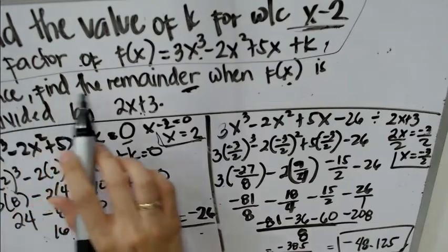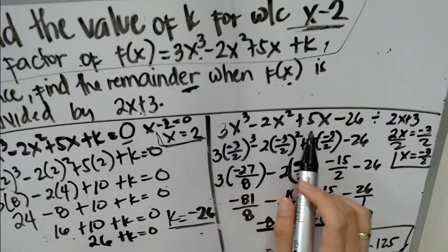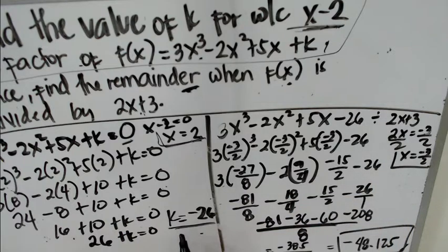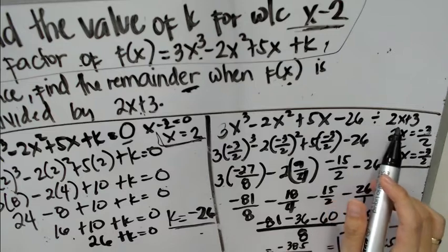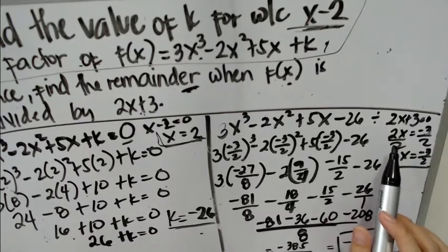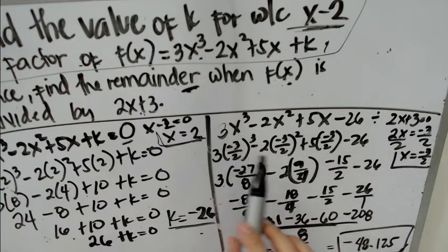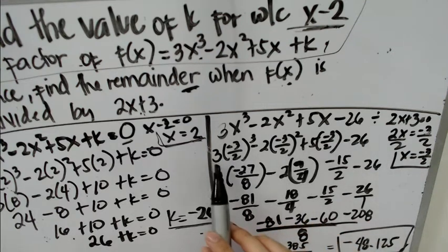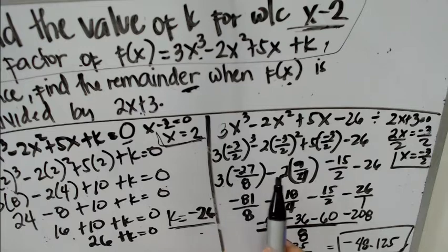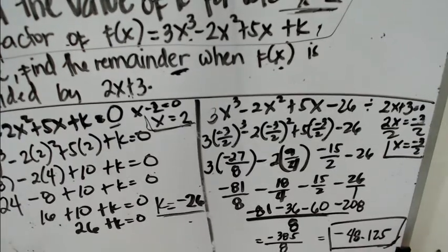We're not done yet, because we also need to find the remainder when the polynomial is divided by another polynomial. So we rewrite as 3x cubed minus 2x squared plus 5x minus 26, since k equals negative 26, and divide by 2x plus 3. Equating 2x plus 3 to 0, we get x equals negative 3 over 2. Substituting into f of x and solving — you can also use a calculator — we get negative 48.125. That's all for this video.